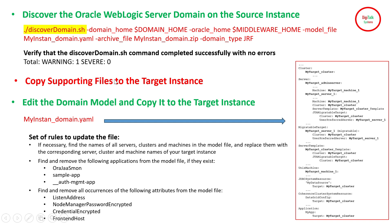Once you run this command, make sure the output shows errors equal to zero; warnings can be one or more and can be rectified later. If errors are not zero, check the command output to identify the cause. After successful discovery, copy both the YAML model file and the archive zip file to your target domain.